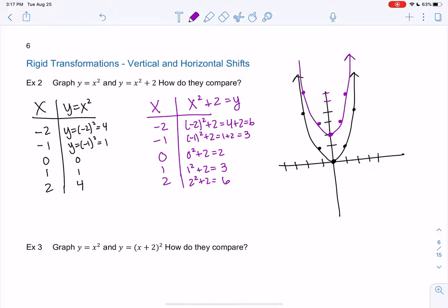0 squared plus 2 is 2, so 0, 2. 1 squared plus 2 is 3, so 1 and 3. And then 2 squared plus 2 is 4 plus 2 or 6, so 2, 6. So it looks like we're getting the same shape, but it's shifting up. What do we think? That's what it looks like. So that's called a vertical shift, and we'll define that in a second.